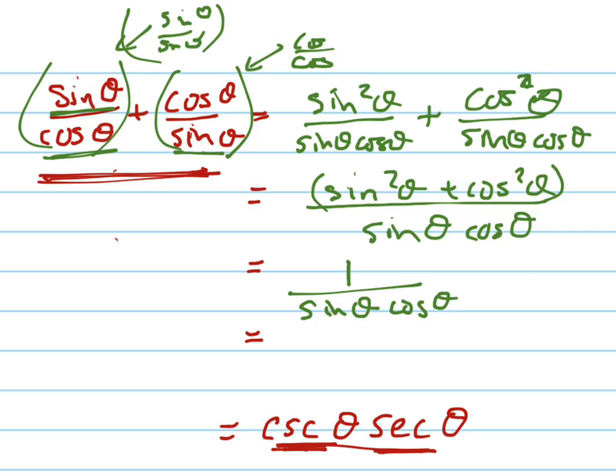Now I can break this up as 1 over sine theta times 1 over cosine of theta, which equals cosecant times secant, and I'm done.